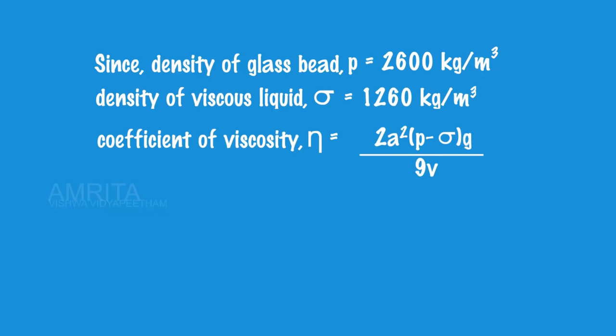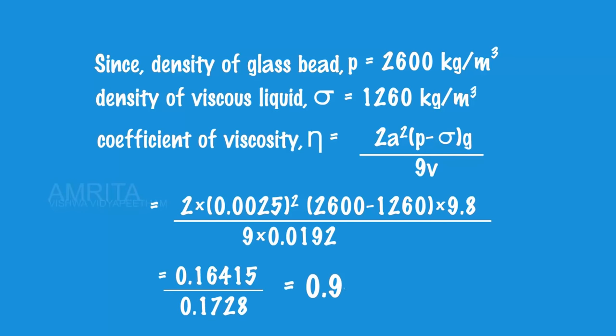The coefficient of viscosity of the liquid can be calculated in each case using the equation η = (2/9) × R²G × (ρ-σ)/V and is found to be 0.9499 newton second per meter square.